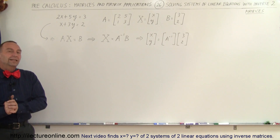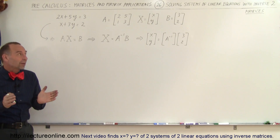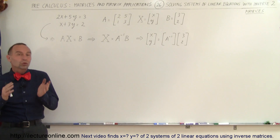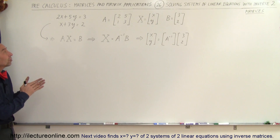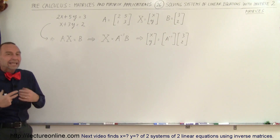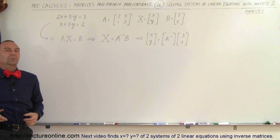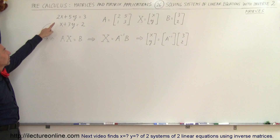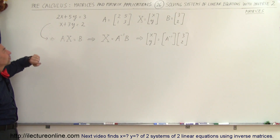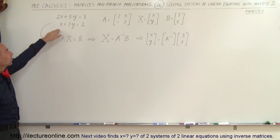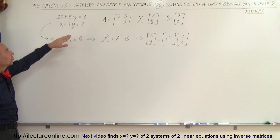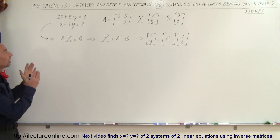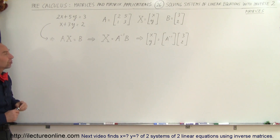Welcome to our lecture online. Here's our first example of how to find the solution to a system of linear equations using the inverse matrix method. We have two simple equations: 2x plus 5y equals 3, and x plus 3y equals 2, and we're trying to find the x and y values that will satisfy both equations.